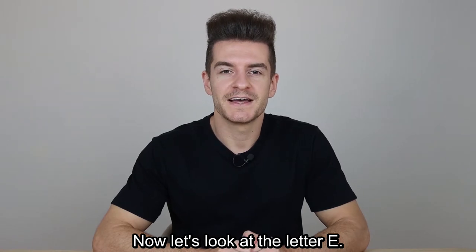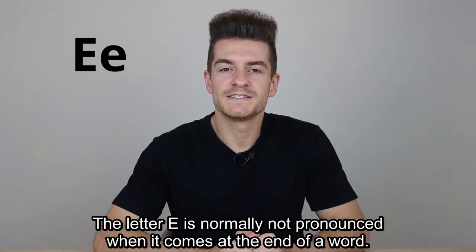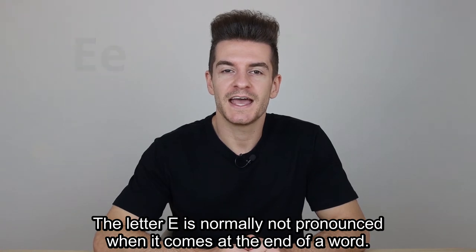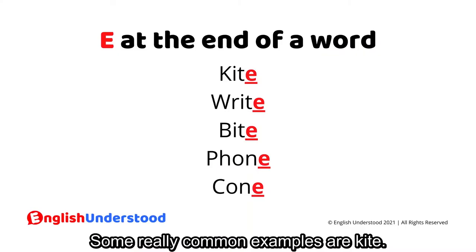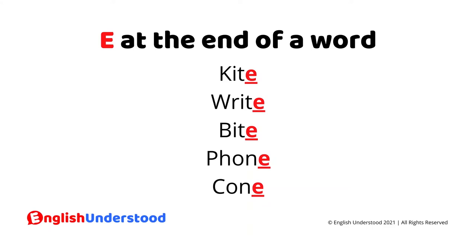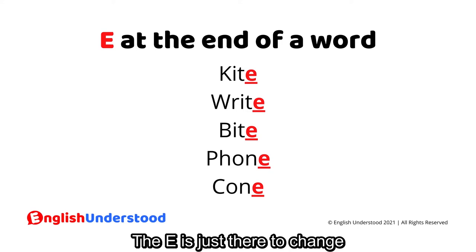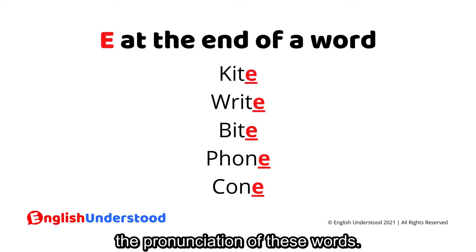Now let's look at the letter E. The letter E is normally not pronounced when it comes at the end of a word. Some really common examples are: kite, right, bite, phone, cone. The E is just there to change the pronunciation of these words.